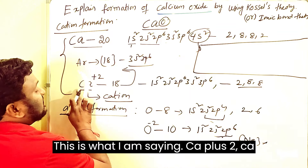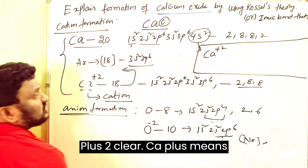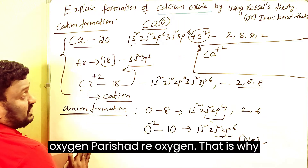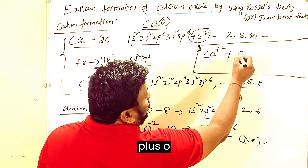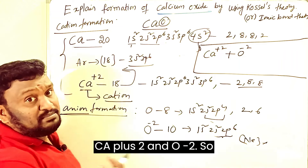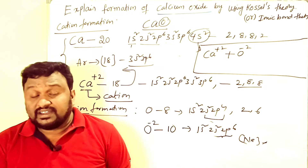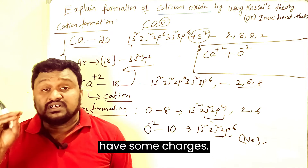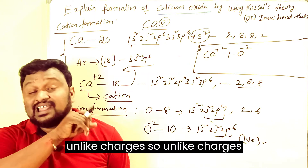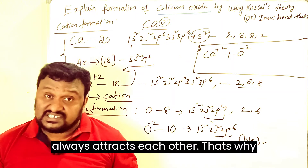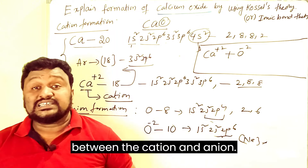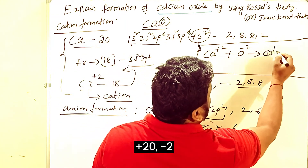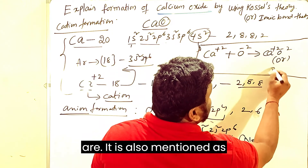In ionic bond formation, Ca²⁺ loses 2 electrons which are transferred from calcium to oxygen. We show this as Ca²⁺ + O²⁻. Ca²⁺ is the cation with positive charge and O²⁻ is the anion with negative charge. These are unlike charges, and unlike charges always attract each other. So there is a strong attraction between the cation and anion, forming a compound.